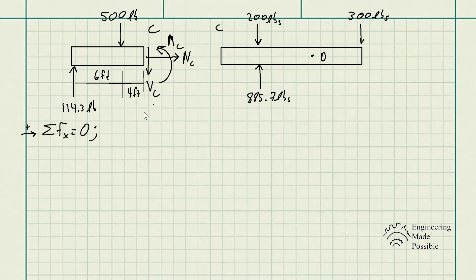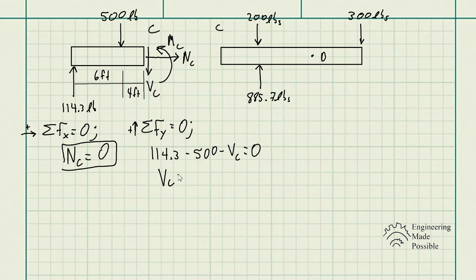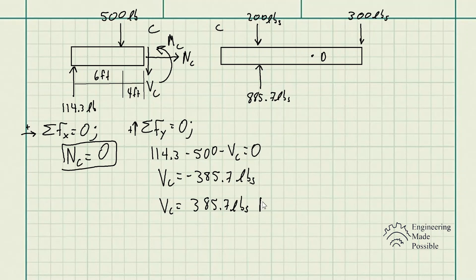Applying static equilibrium to the left section: for the sum of forces along X, we only have NC, so NC equals 0. For the sum of forces along Y, we have 114.3 minus 500 minus VC equals 0, giving VC equal to negative 385.7 pounds. The negative sign means we assumed the wrong direction, so the shear force is actually 385.7 pounds acting upward.